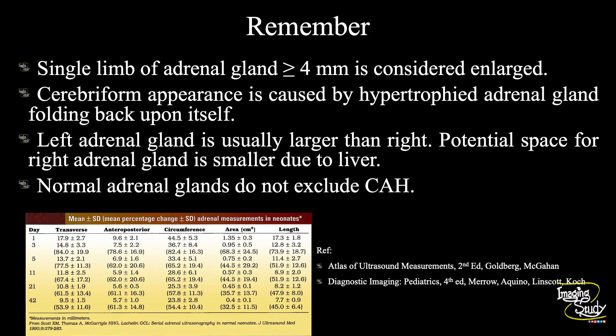The take-home messages: if a single limb of the adrenal gland is greater than or equal to 4 millimeters, it is considered enlarged. The cerebriform appearance is caused by the hypertrophied adrenal gland folding back upon itself. The left adrenal gland is usually larger than the right one due to the liver limiting the potential space on the right. Importantly, the presence of normal adrenal glands does not exclude congenital adrenal hyperplasia. We have provided a chart taken from the Atlas of Ultrasound Measurements by Goldberg, an excellent reference for ultrasound measurements, which may be helpful as these cases are not commonly seen in practice.